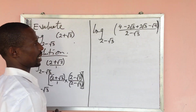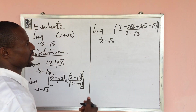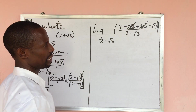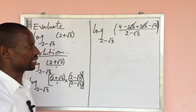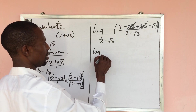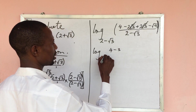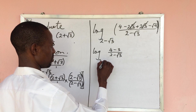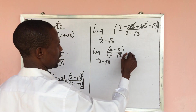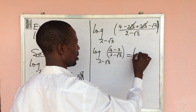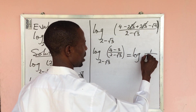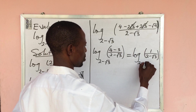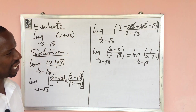Now notice that −2√3 and +2√3 cancel each other out. We also have √9 = 3, so the numerator becomes 4 − 3 = 1. This gives us log[1/(2 − √3)] base (2 − √3). Something special has occurred here.